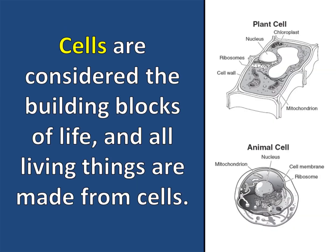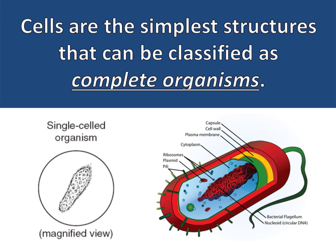All of the organelles and cell parts come together to create cells. Cells are considered the building blocks of life, and all living things are made from cells. Cells are the simplest structures that can be classified as complete organisms, meaning that there are some living things made of just one cell.